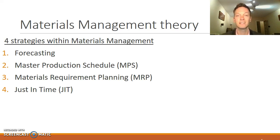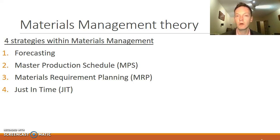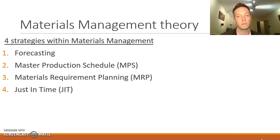Master production schedule then takes that forecast to form an overall picture of what is to be produced and when. For example, if you're thinking of Mars confectionery, that might be: we need 20 tonnes of Mars produced tomorrow, 30 tonnes of Snickers produced the day after. Broad production runs — what is to be produced and when.